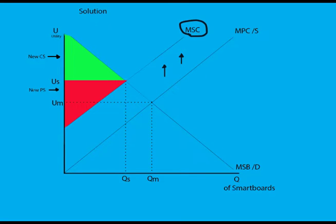The solution to the market failure requires the school district to place a per unit Pigouvian tax on having smart boards in classrooms. This causes the marginal private cost line to shift upwards to the marginal social cost line, representing the removal of smart boards from some classrooms.